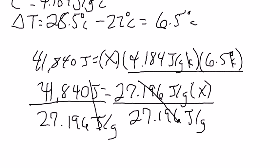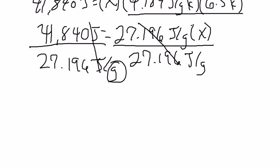Notice here, when we cancel these units, we're left with grams, which is our unit of mass. Which is exactly what we want. So 41,840 divided by 27.196 gives you 1,538.5 grams. And that equals our mass. So that is our final answer for mass.